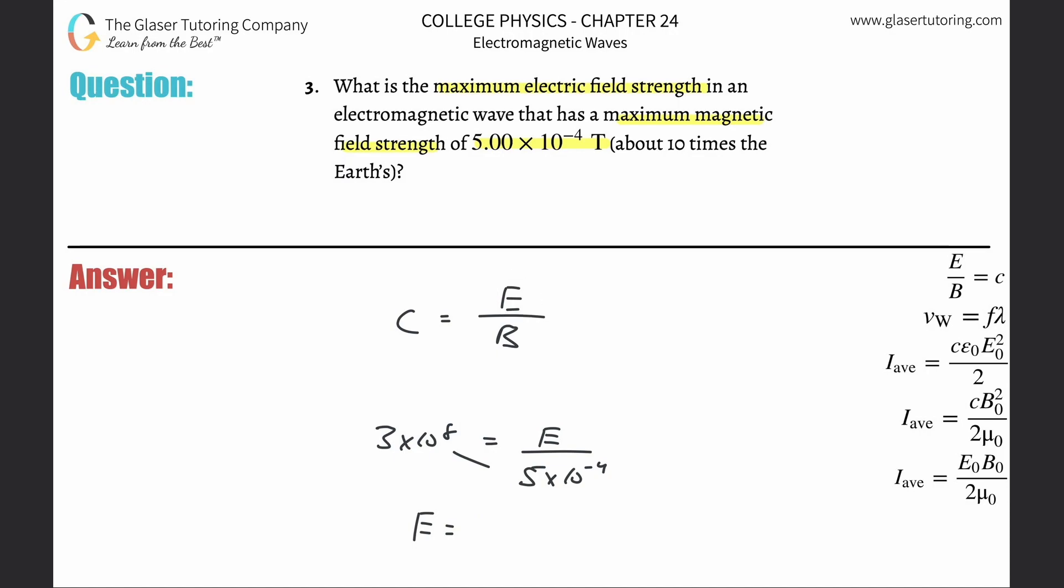So simply take 3 × 10^8 and multiply by 5 × 10^-4. I'm going to get a value of about 1.50 × 10^5.